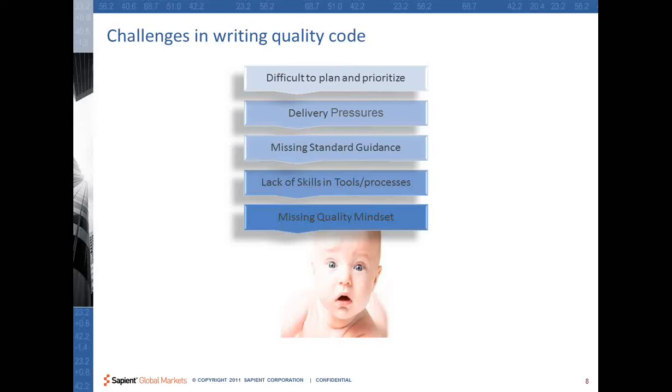The other thing is that maybe a few developers have a good quality mindset but others don't. The whole environment is not conducive, so there's a missing quality mindset. Then there's also issues in terms of tools and processes—we do not have the proper skill set. Sometimes it's missing. So all these things are the different issues while we have to deal with writing good and solid code.